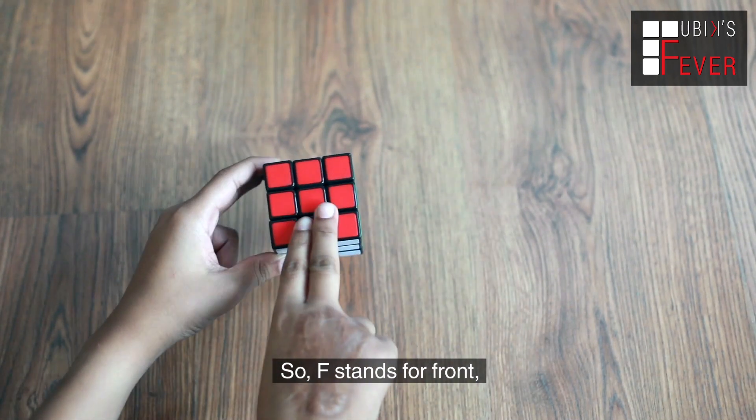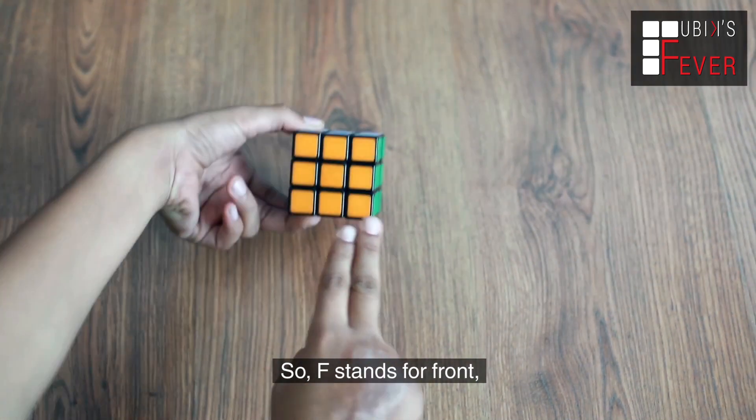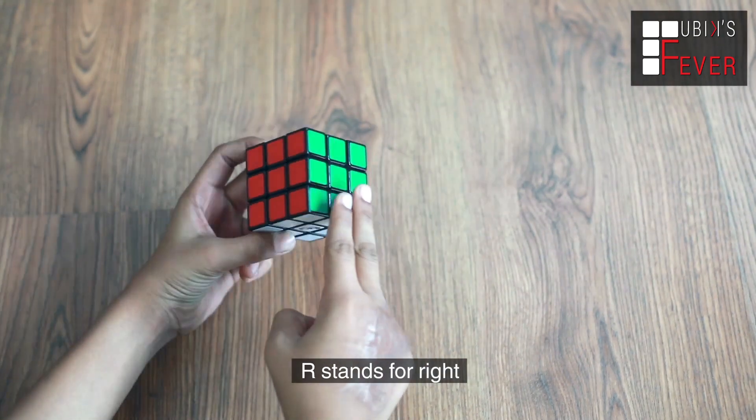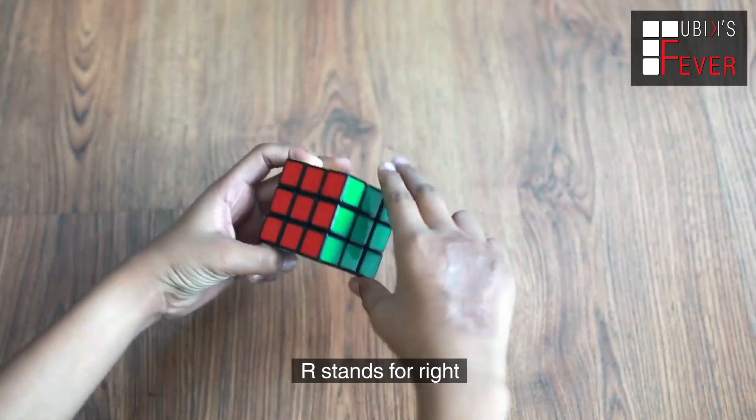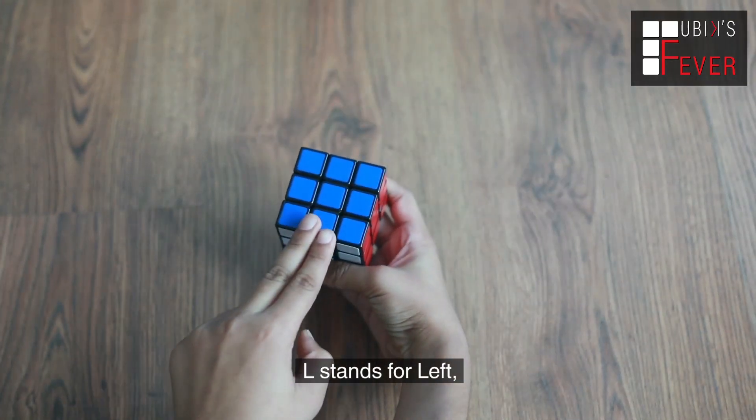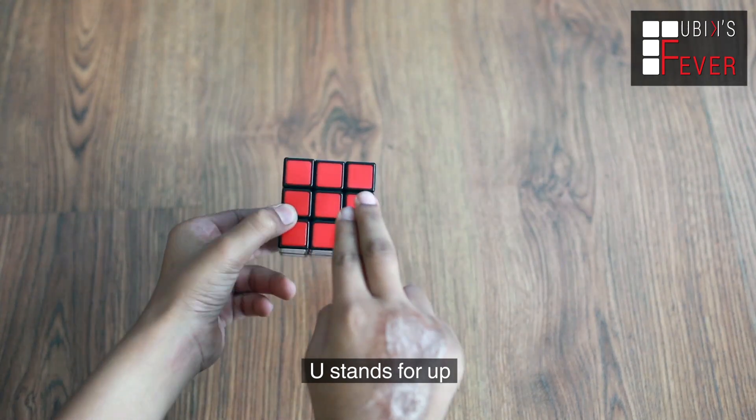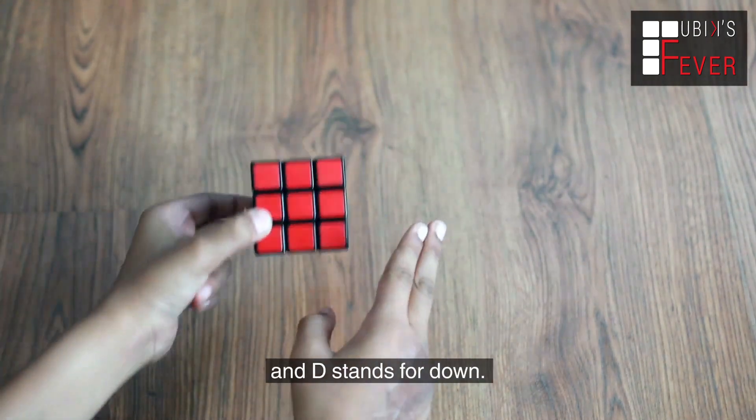F stands for front, P stands for back, R stands for right, L stands for left, U stands for up, and D stands for down.